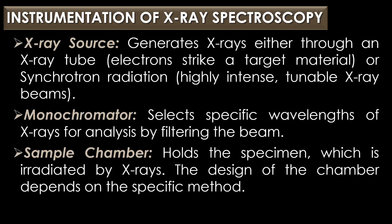The first part is the X-ray source, which generates X-rays either through an X-ray tube or synchrotron radiation. The second part is the monochromator, which selects specific wavelengths of X-rays for analysis by filtering the beam.